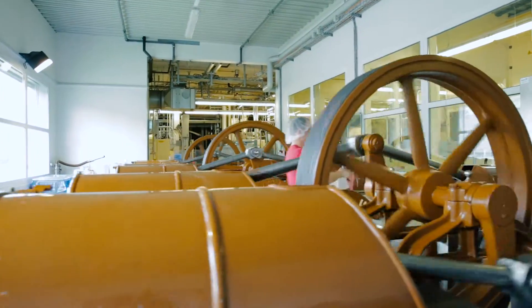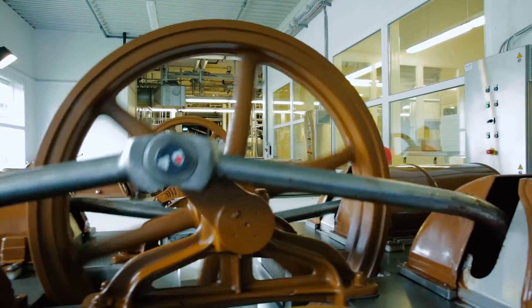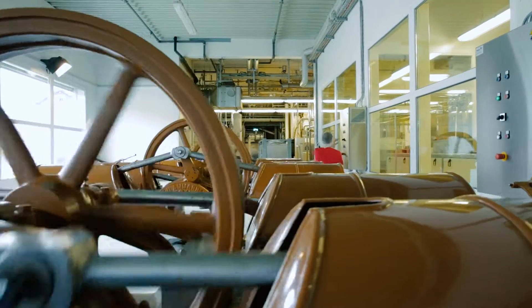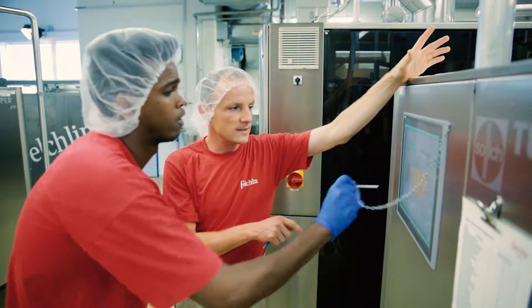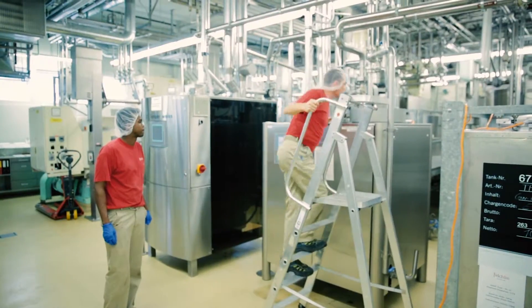When the chocolate has been conched and is fluid, we have to crystallize it and turn it into a solid form. Crystallizing is not exactly easy, however, since there are different crystal forms that may appear and we want to produce just one of six different crystal forms, the stable one.